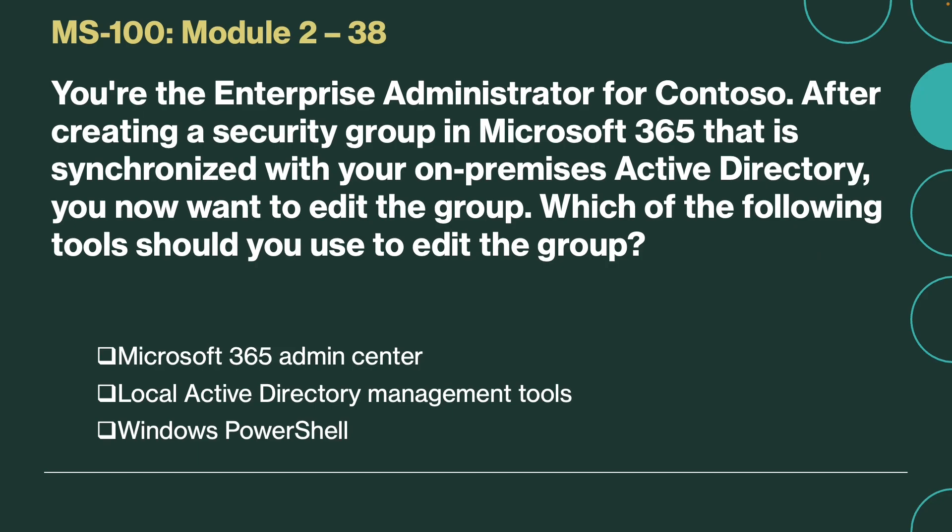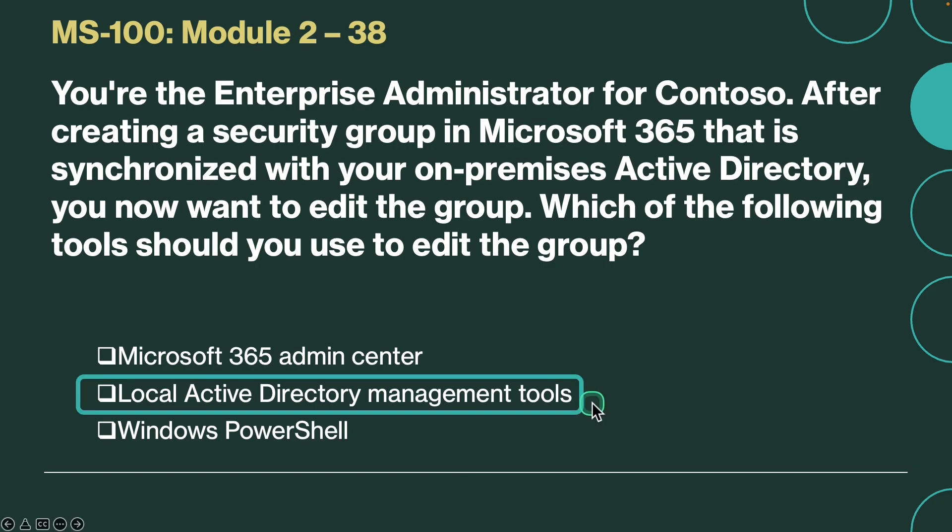Next question. You are the enterprise administrator for Contoso. After creating a security group in Microsoft 365 that is synchronized with your on-premises Active Directory, you now want to edit the group. Which of the following tools should you use to edit the group? The correct answer is local Active Directory management tools. Security groups that are synchronized with your on-premises Active Directory can only be modified using the local Active Directory management tools.